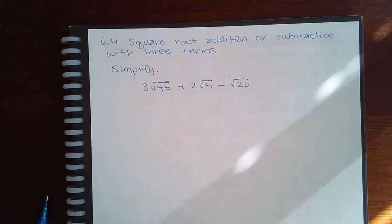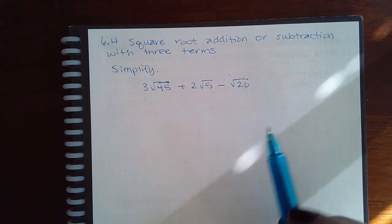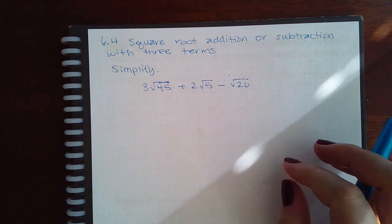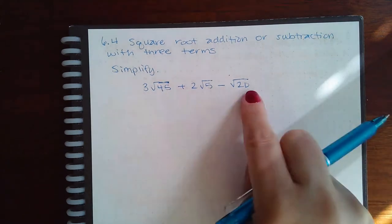So here we have 6.4 square root addition or subtraction with three terms now. So again, these are not like terms right now.